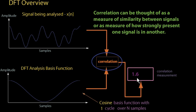In this example we have a time domain signal X being compared against a DFT analysis basis function, which is a cosine waveform that has exactly one cycle over N samples, where N represents the number of samples in the signal being analyzed. In this case the output of the correlation is producing a numerical value of 1.6. The magnitude of this correlation measurement gives an indication of how strongly present the analysis basis function is in the time domain signal being analyzed. The greater the magnitude of the correlation measurement, the more strongly present the analysis basis function is in the time domain signal.